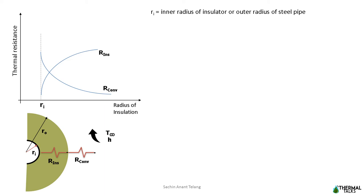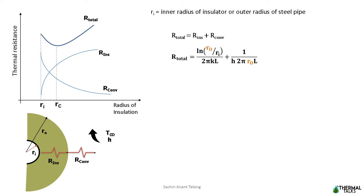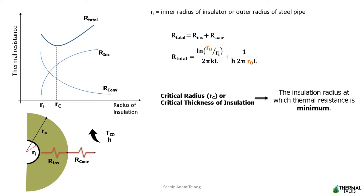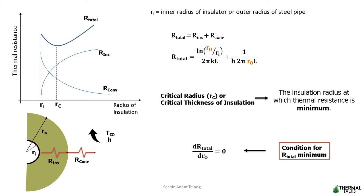We can represent the sum of insulation resistance and convective resistance as total resistance. Note that the total resistance approaches a minimum. The insulation radius at which the total thermal resistance is minimum is called the critical radius or critical thickness of insulation. As total thermal resistance depends on outside radius of insulation Ro, we can find that critical radius for the insulating cylindrical system by differentiating the total resistance with respect to Ro and equating it to zero.